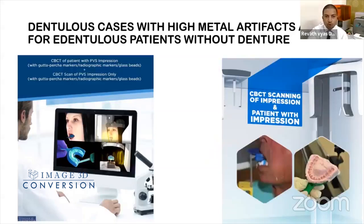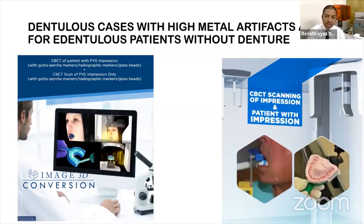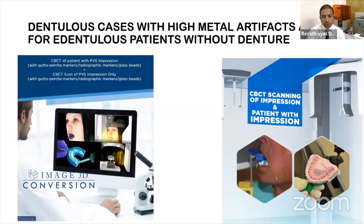The same method can be followed in edentulous patients without a denture. Place a polyvinyl siloxane impression with radiopaque markers on the tray in the patient's mouth and send them for the scan. Then do another scan of only the impression with the radiopaque markers. This impression scan gives the soft tissue data, and the CBCT with the impression in the mouth gives the hard tissue data with radiopaque markers.